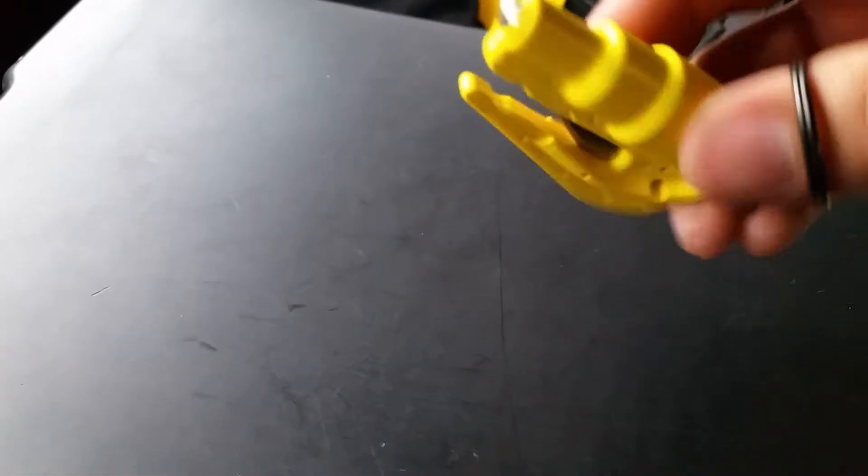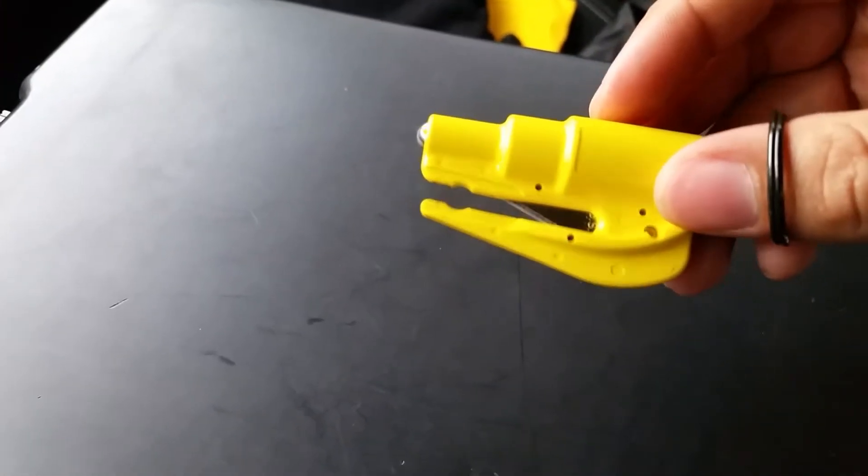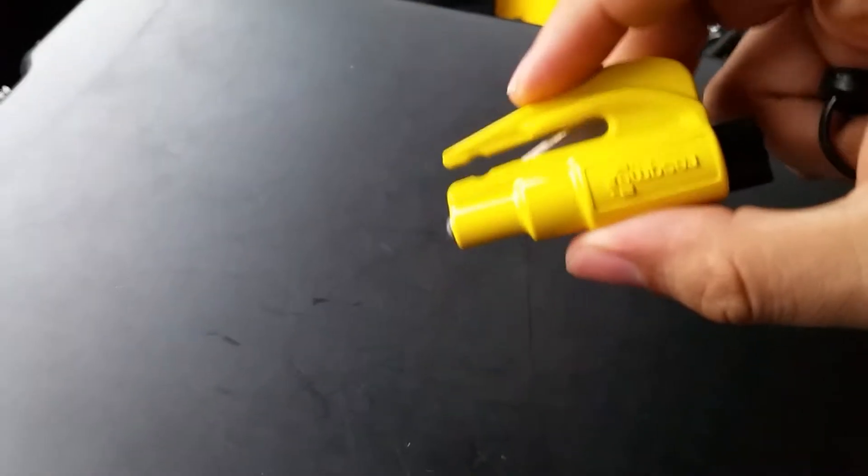Pull that off and that is a seat belt cutter, or you could cut clothing off of somebody who's having a medical situation where you need to put a tourniquet on them, anything like that. It comes in three colors that I know of, this yellow.